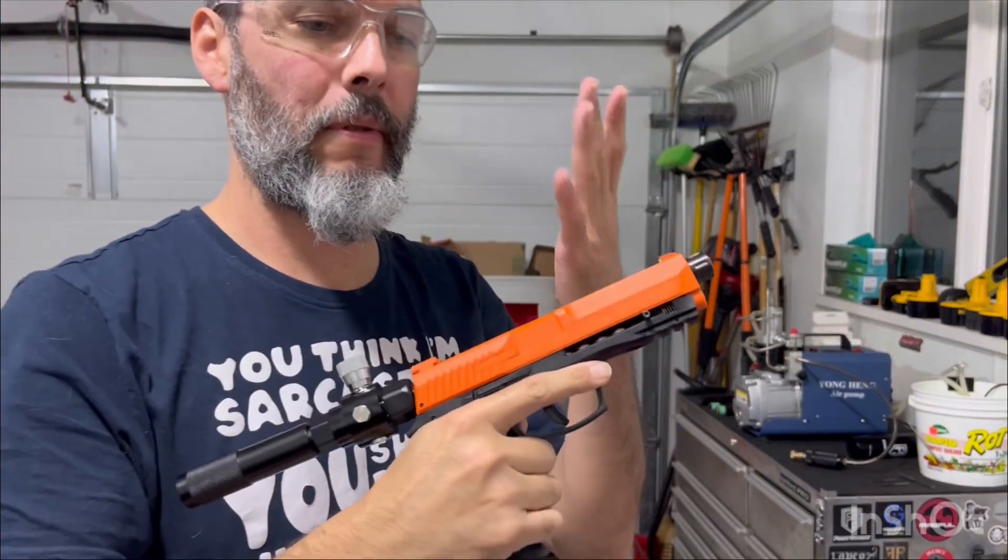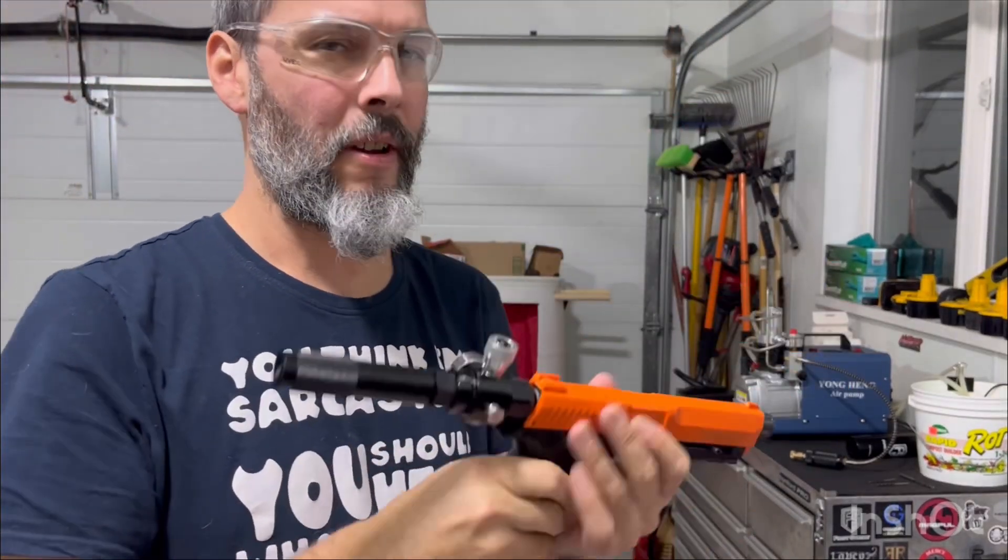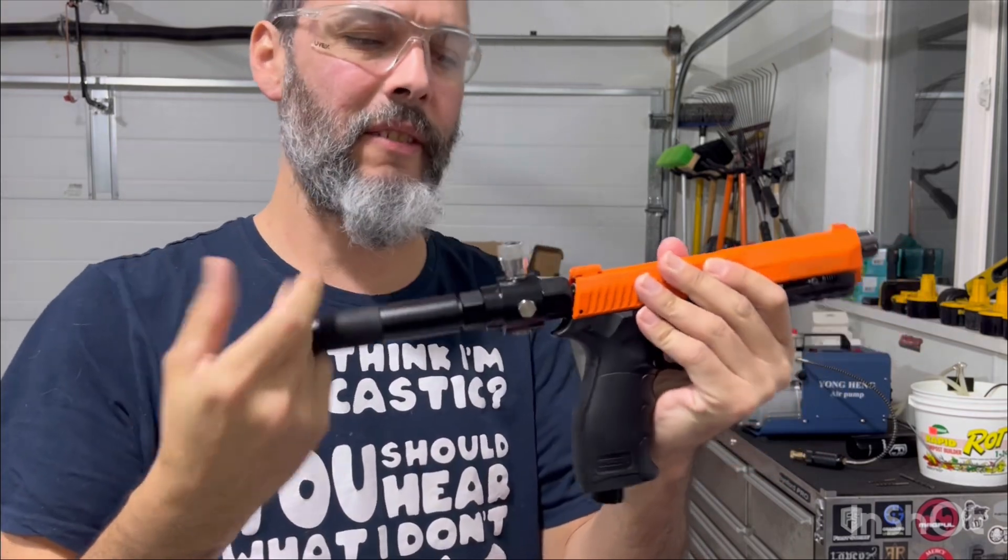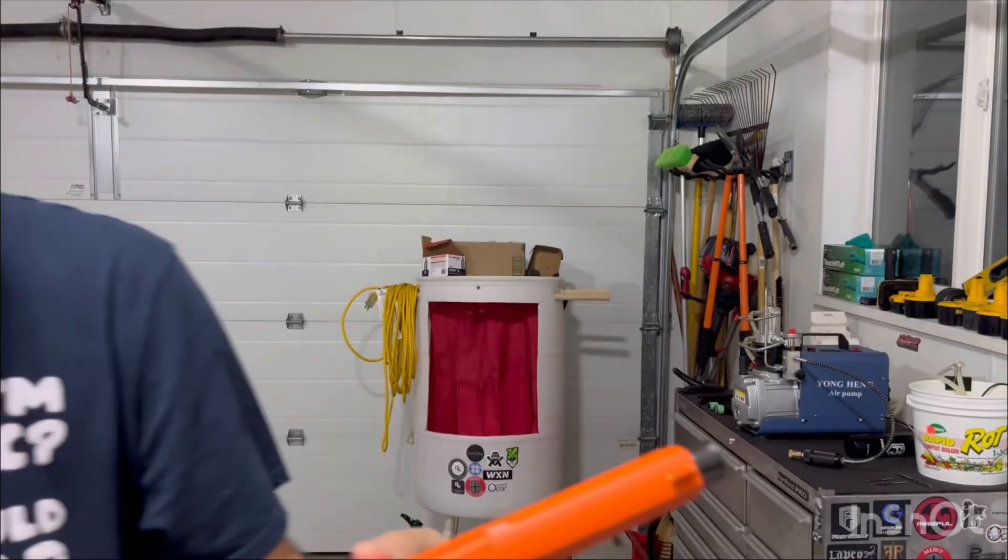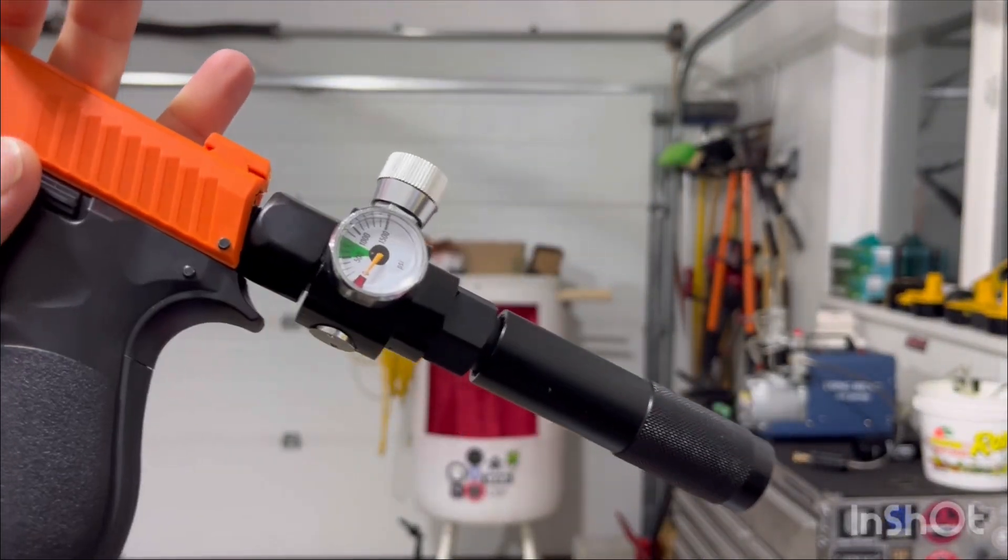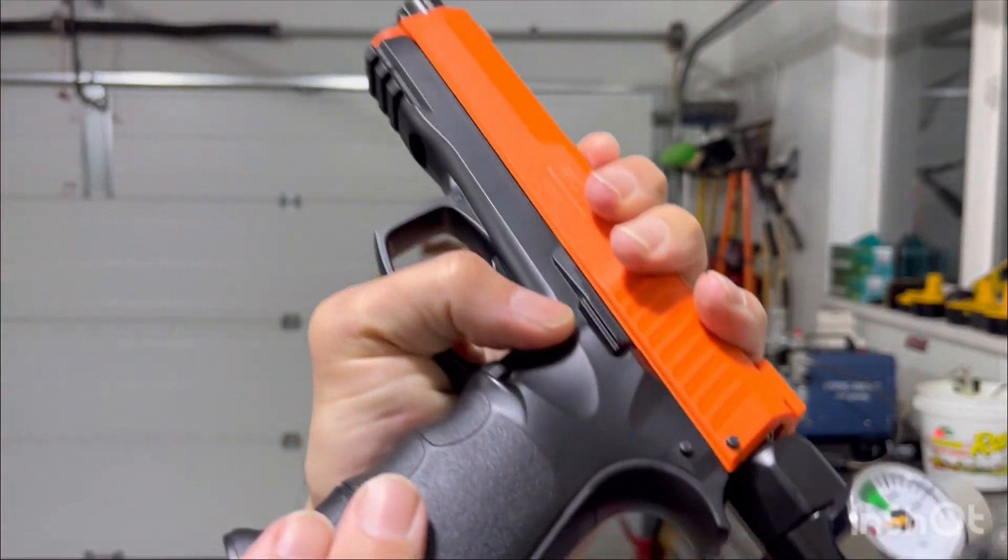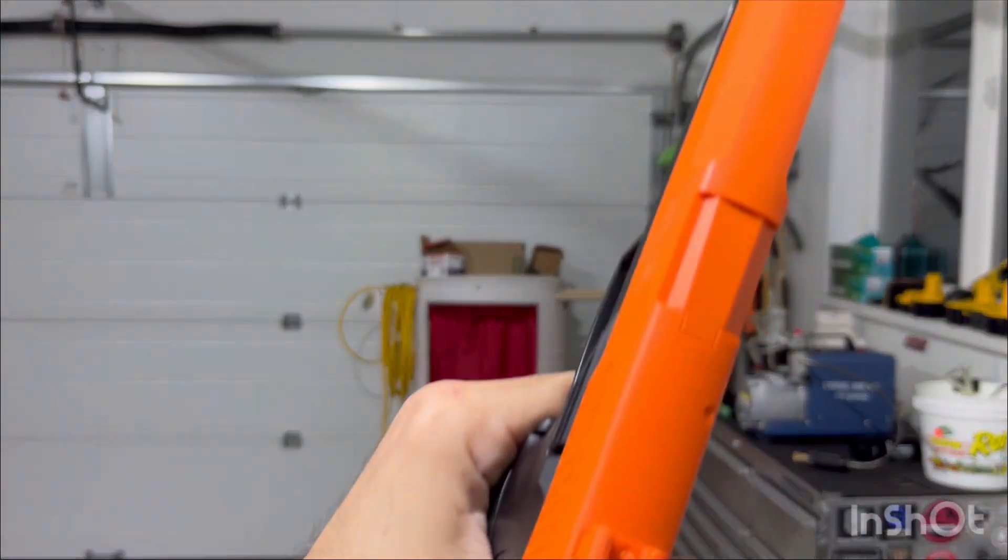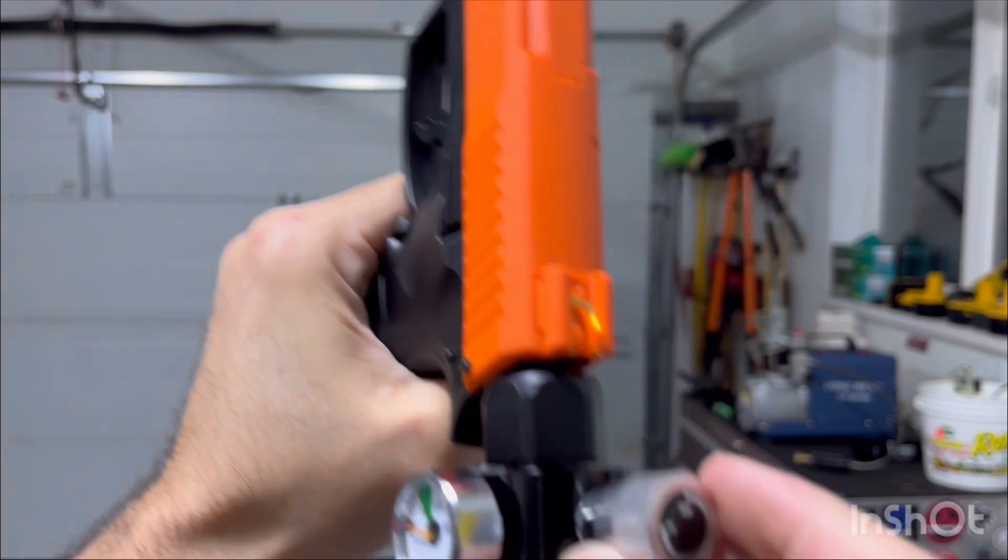HDP 50, 8.4 gram steel balls, regulated CO2. It's a 12 gram, it's charged, it's in the rear grip, is empty.